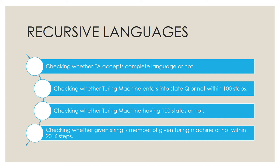Checking whether a Turing machine has 100 states or not is also a recursive language, since a finite arbitrary number is given — it could be 100, 1200, or anything. Similarly, checking whether a given string is a member of a given Turing machine or not within 2016 steps (any finite number) is also recursive. The key point: a finite condition must be given in these last examples.